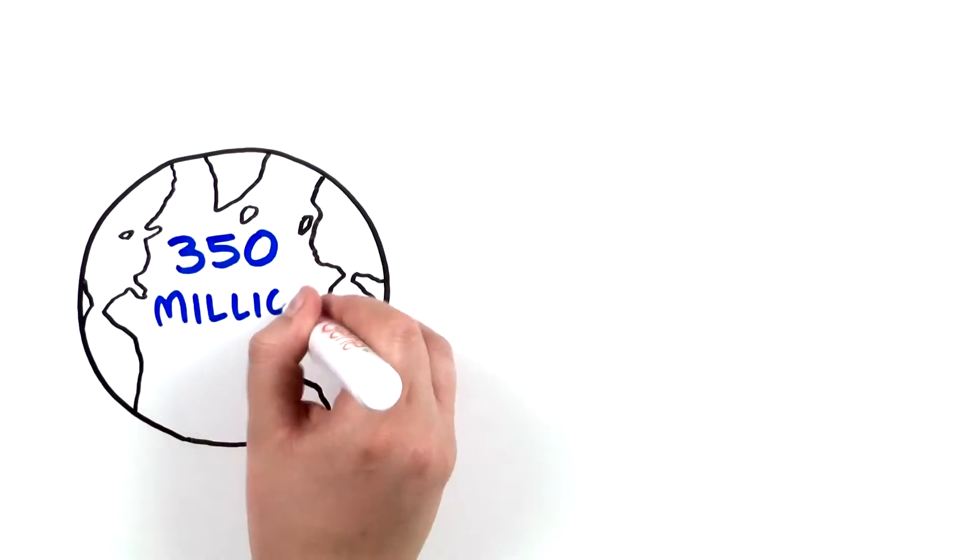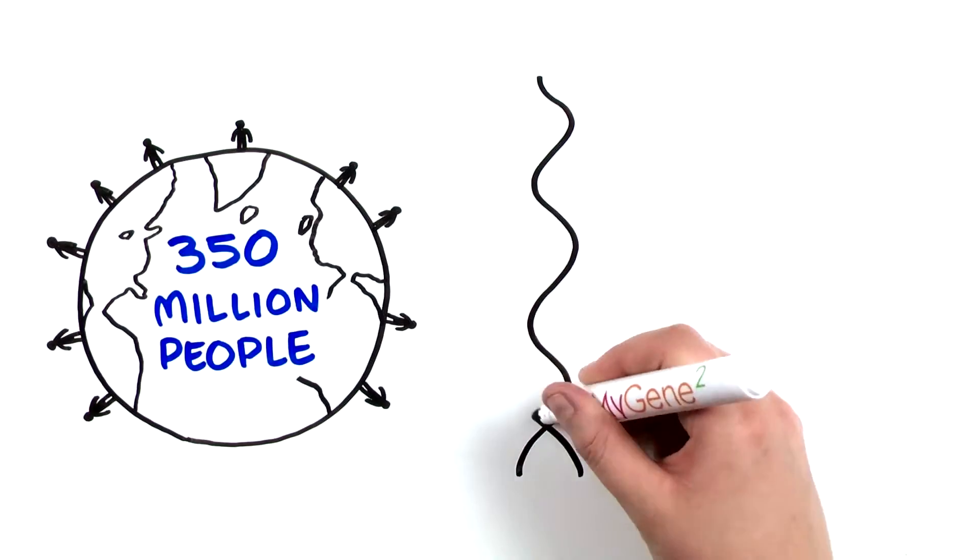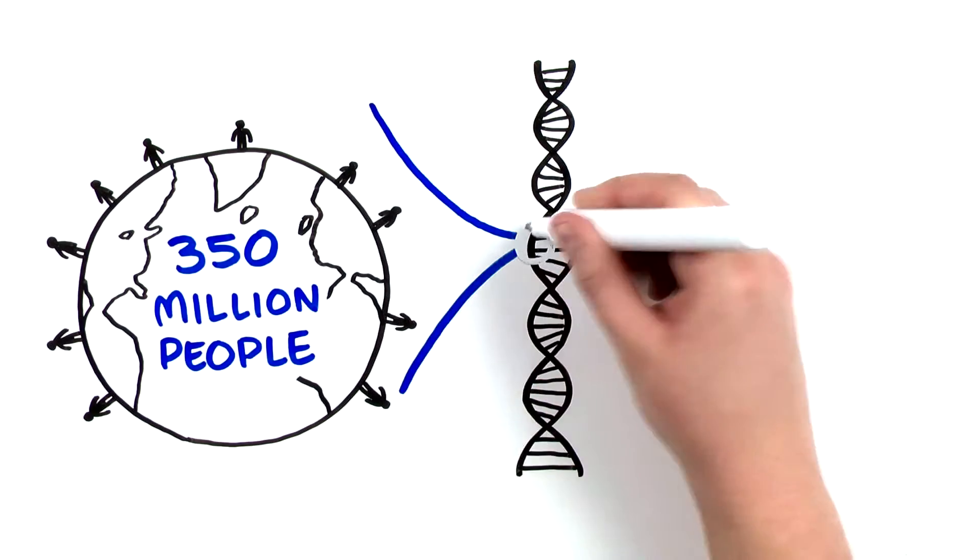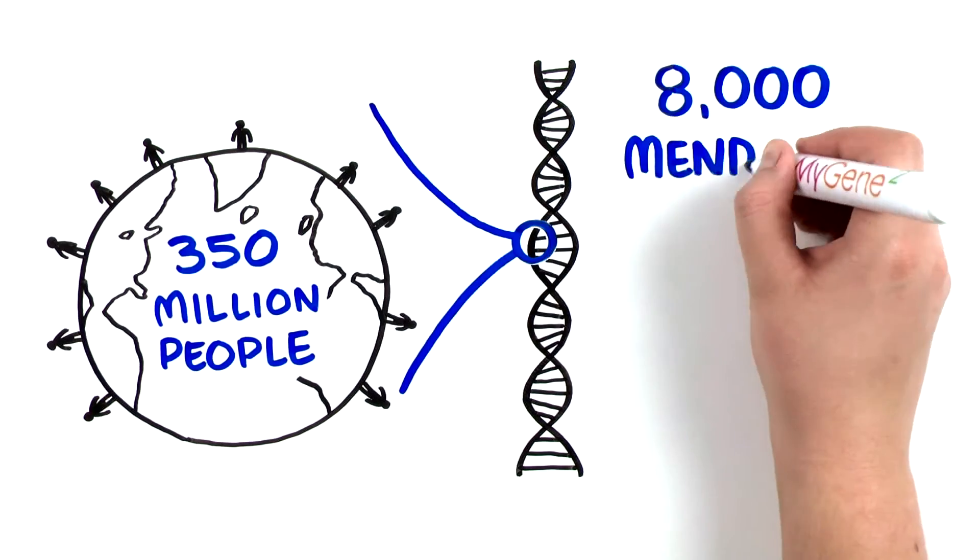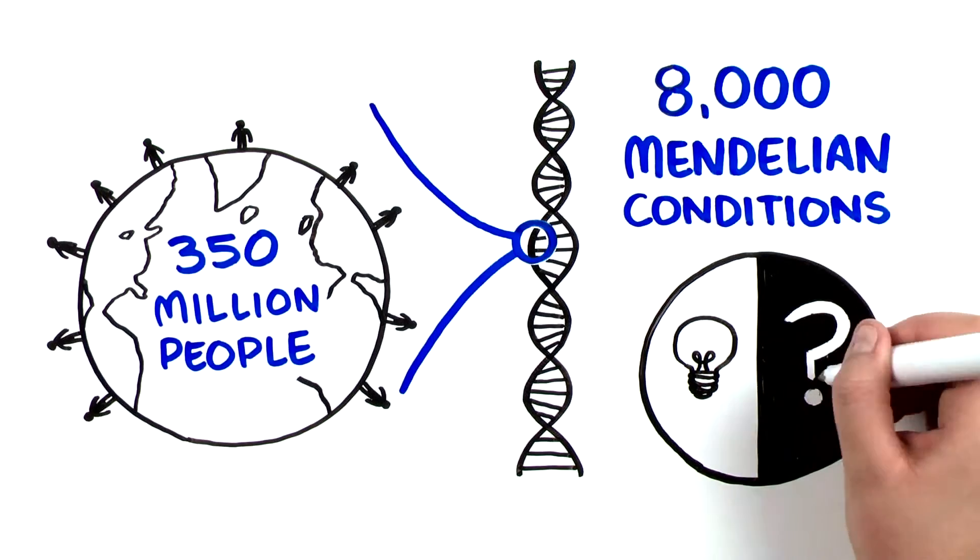Worldwide, 350 million people have a rare disease. Most are Mendelian conditions, meaning they're caused by mutations in a single gene. But of 8,000 Mendelian conditions, the causal gene is known for only half.